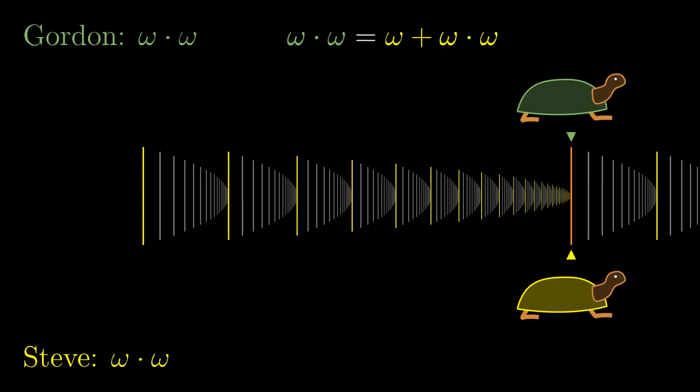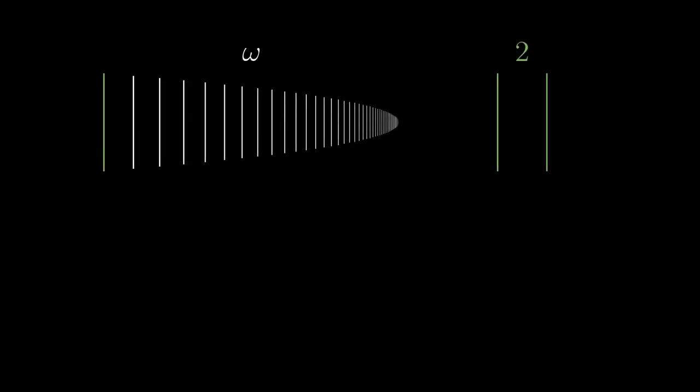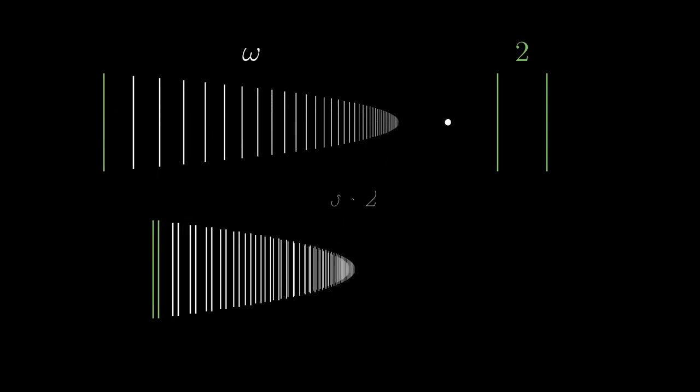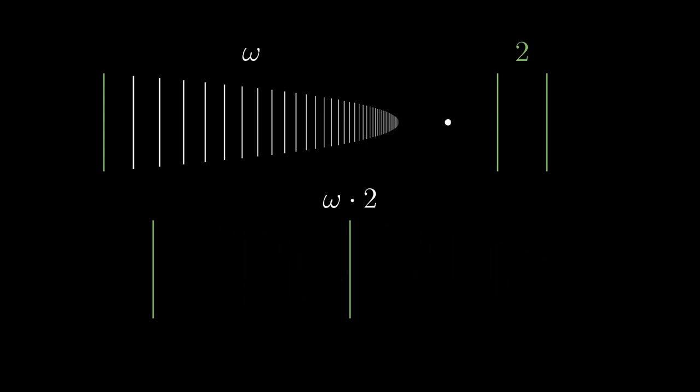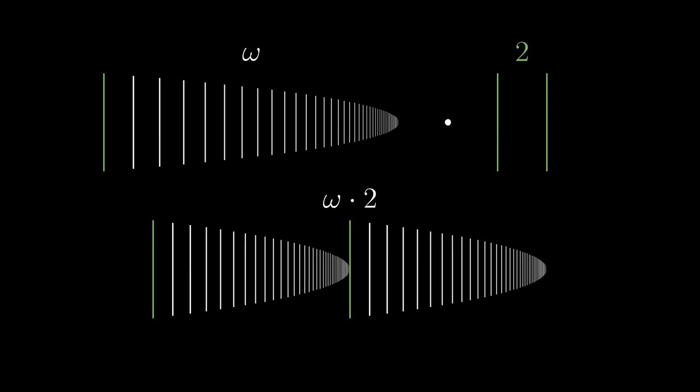That brings us to the next topic in this chapter, ordinal multiplication. Take two ordinals, say omega and 2. If we want to compute their product, we take the first one as a base and copy it as many times as the second ordinal suggests. That is the same as saying that every point of the second factor, that's 2, was replaced by a copy of the first factor, that's omega.